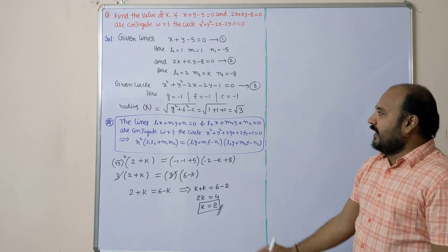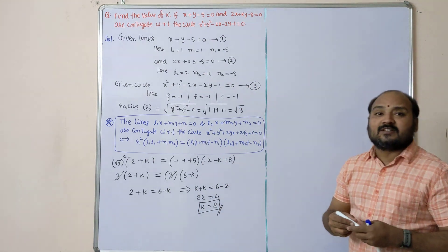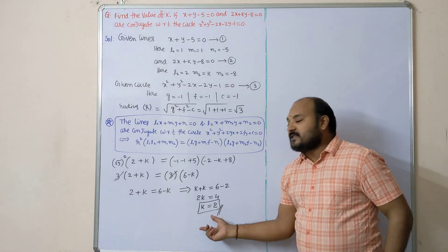So if the lines are conjugate with respect to the given circle, then the value of k is 2.